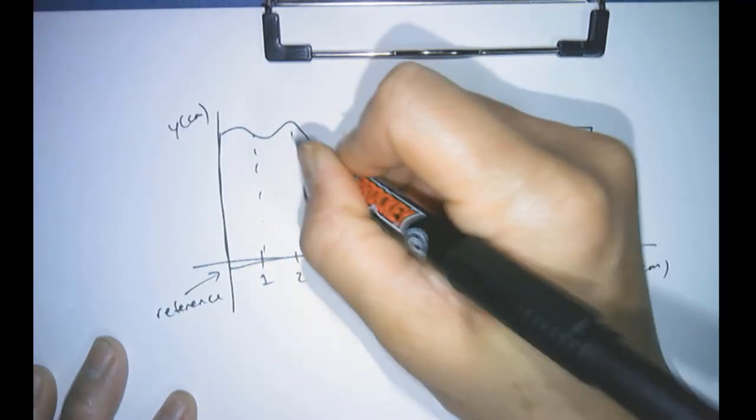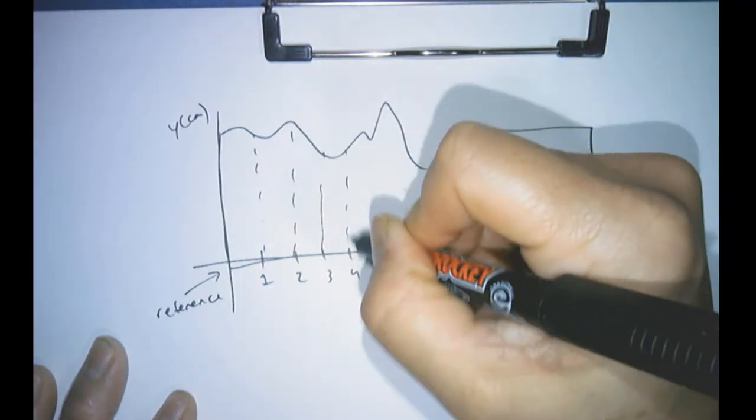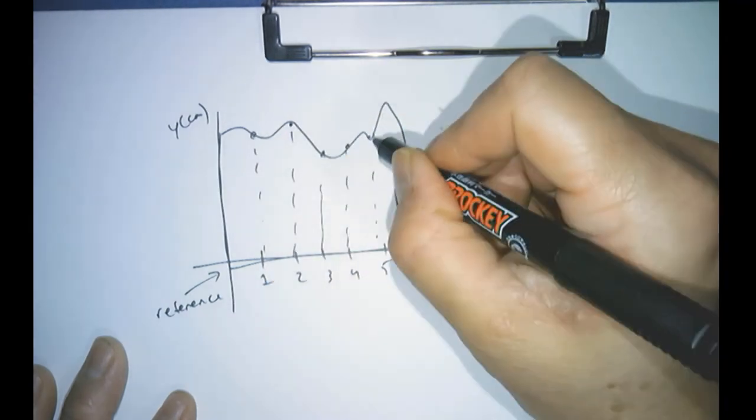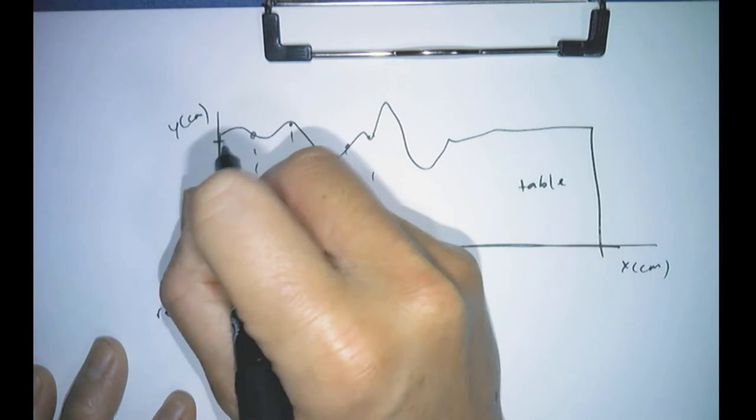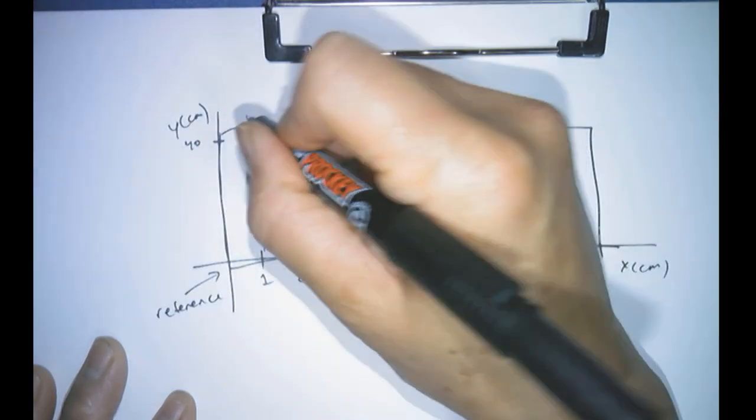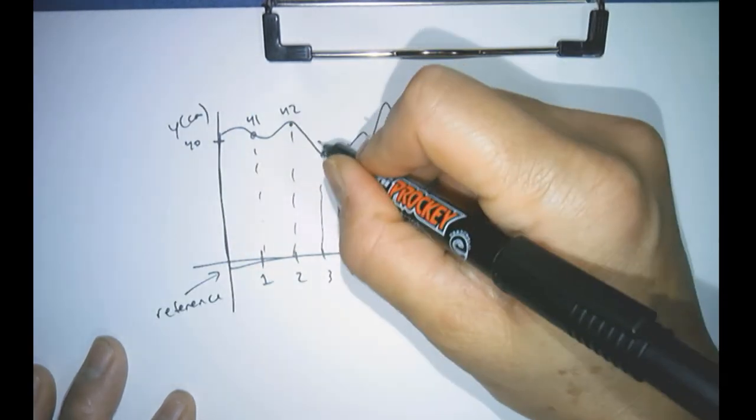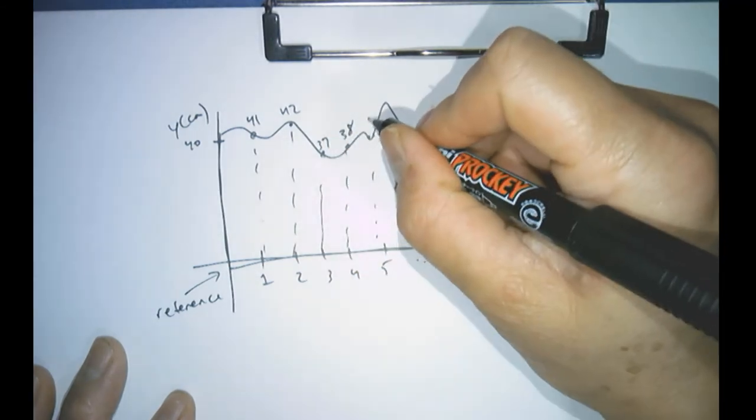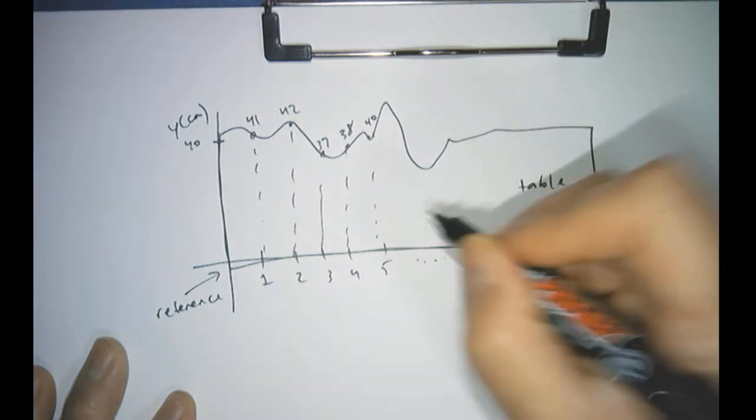Once we have that, then what we do is we use our ruler, and we measure the distance from the reference point to the tip of the profile of the table. And we do that at each of our sampling points. Once we have those numbers, then what we can do is we can recreate the profile of the table inside our CAD tool, like SketchUp.